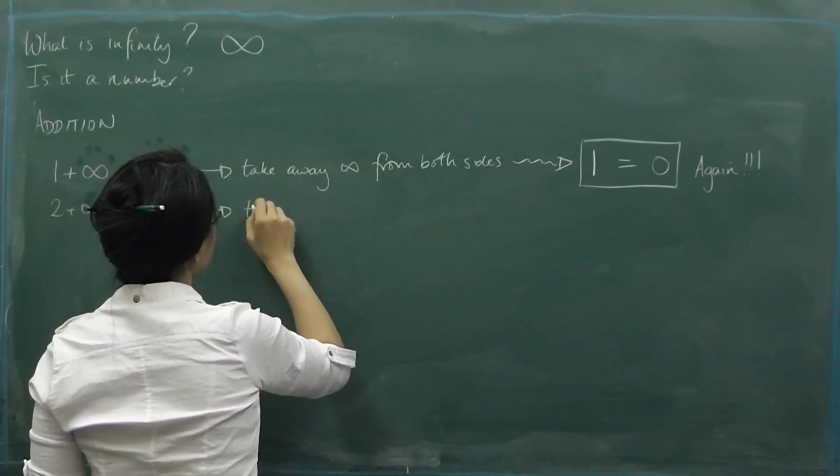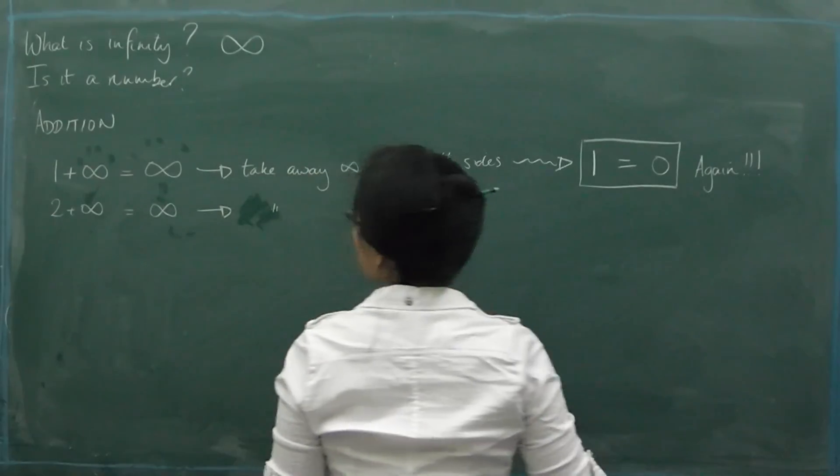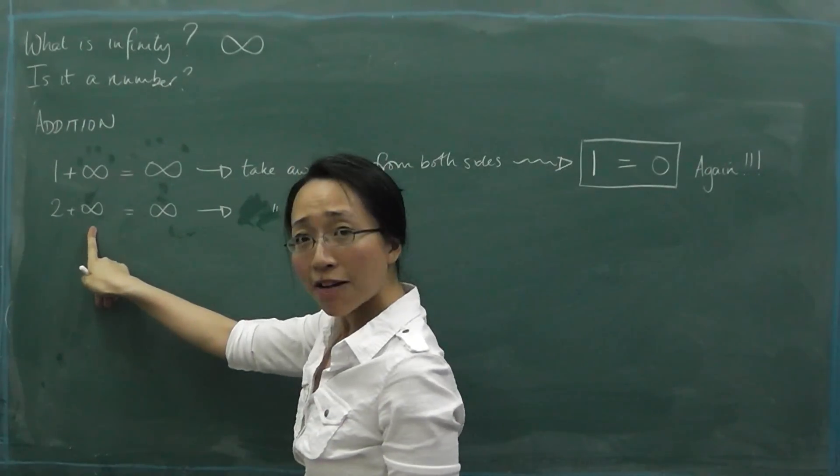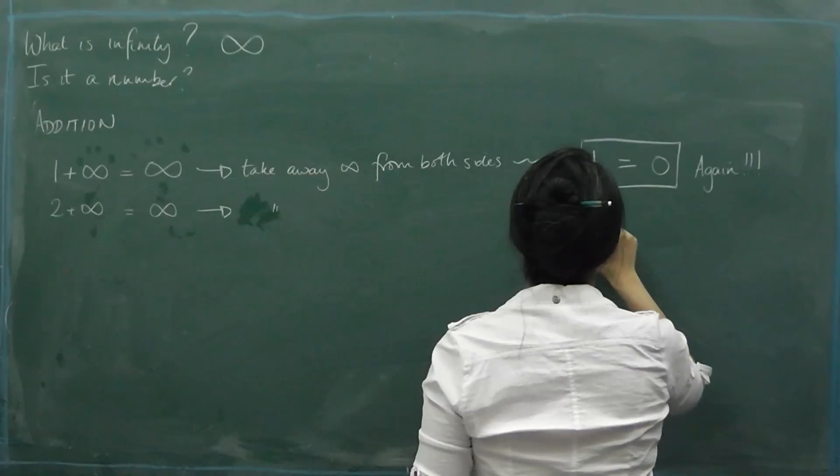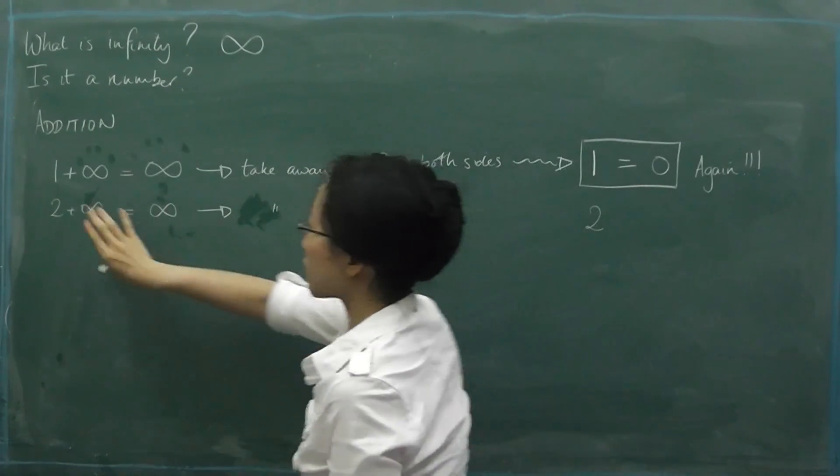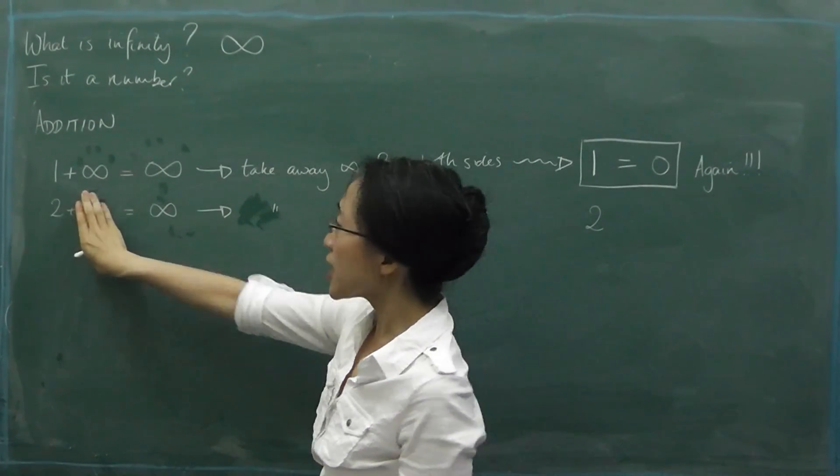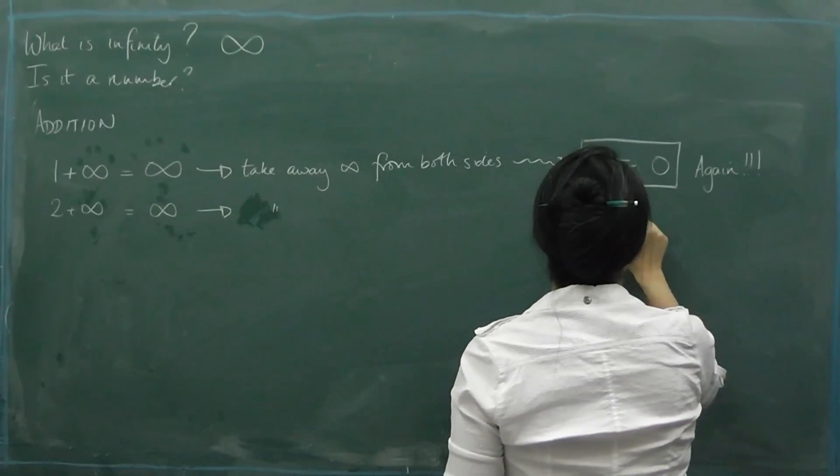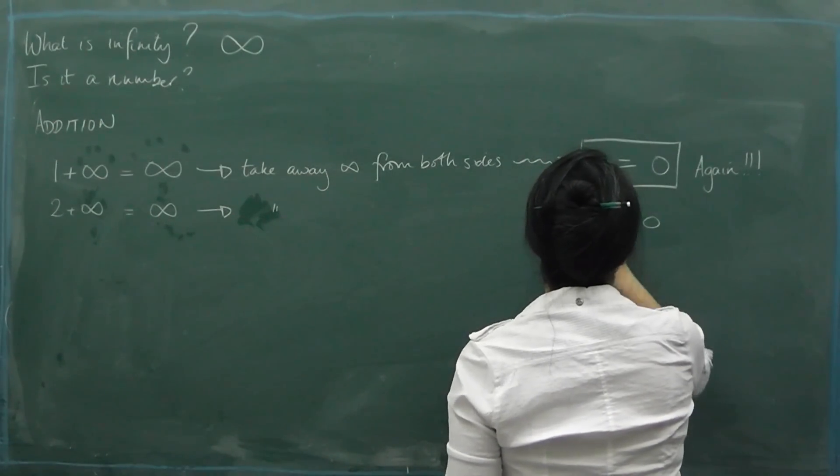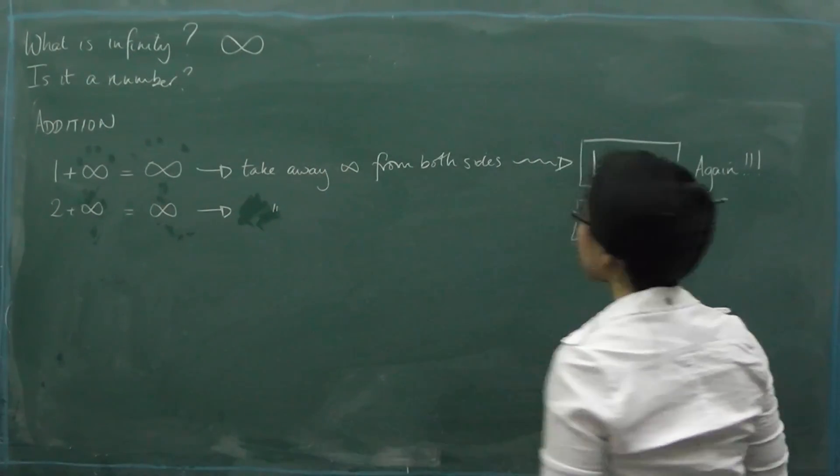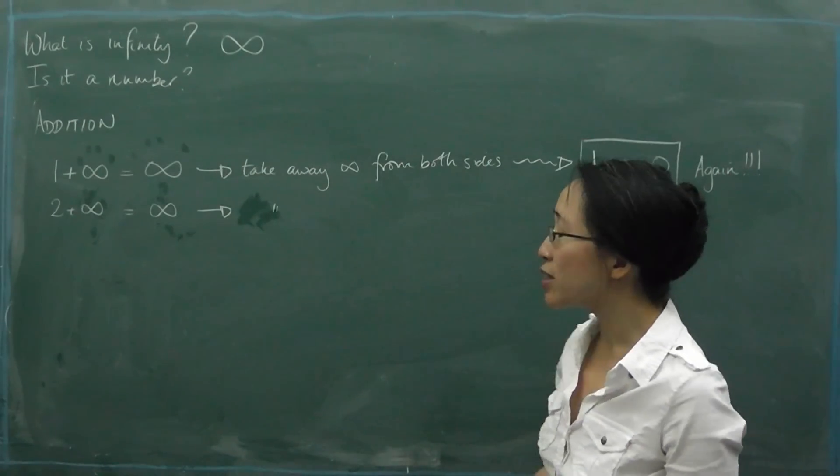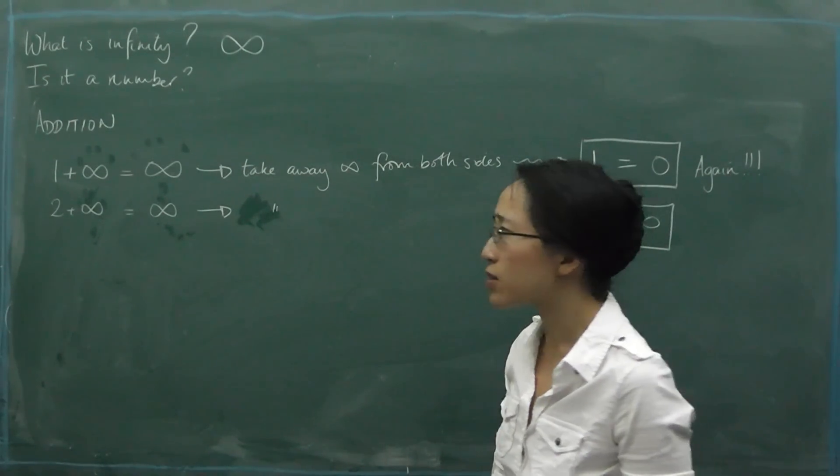So if we take away infinity from both sides from there, then if we take away infinity from the left-hand side, then we still ought to get two because that will just get rid of that infinity. And if we take away infinity from the right-hand side, we'll get zero. So we've got two equals zero. We've got one equals zero. We're going to end up getting everything equal zero.